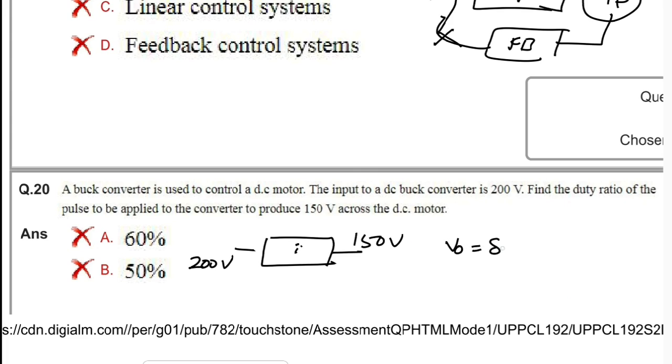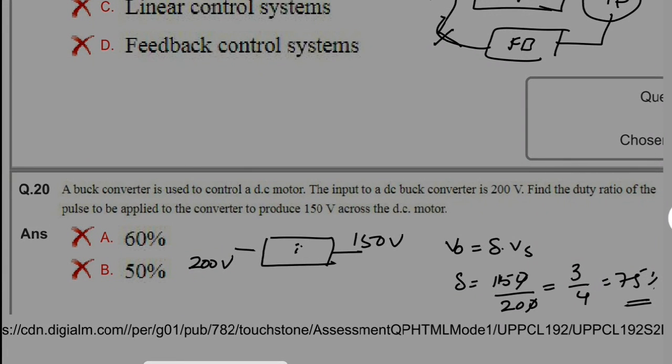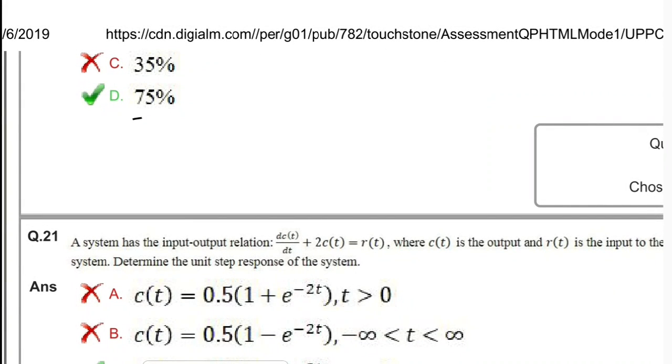For buck converter, the output voltage V₀ = δ × Vs. So δ = 150/200 = 3/4 = 75%. 75% is the right option for this question. Thank you friends, thanks for watching my video. If you like my video, please subscribe, share, and comment. Thank you.